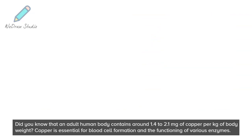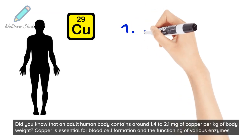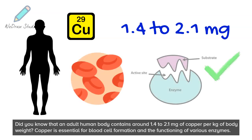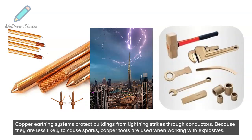Did you know that an adult human body contains around 1.4 to 2.1 milligrams of copper per kilogram of body weight? Copper is essential for blood cell formation and the functioning of various enzymes. Copper earthing systems protect buildings from lightning strikes through conductors. Because they are less likely to cause sparks, copper tools are used when working with explosives.